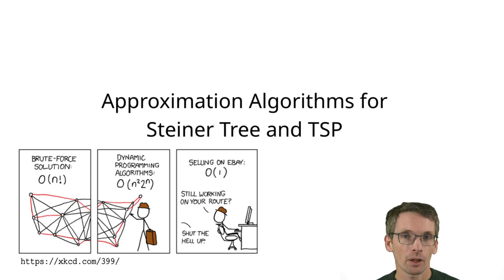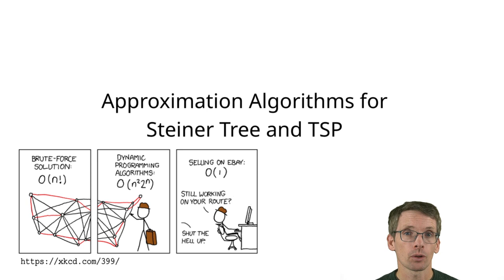We are going to take a look at approximation algorithms for the Steiner Tree problem and the Travelling Salesperson problem. More specifically, we're going to see a 2-approximation for the Steiner Tree problem and a 2-approximation and then a 1.5 approximation for the metric Travelling Salesperson problem. Let's start with the Steiner Tree problem.